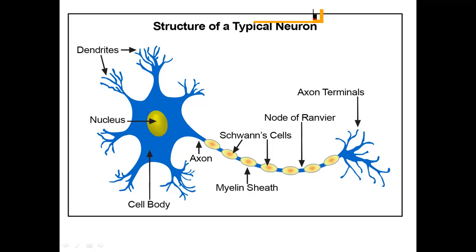The entire nerve impulse transmission occurs in a very fast way. Next is the node of Ranvier. This constriction — the neurolemma part — wherever the myelin sheath is absent, it forms the node of Ranvier. At the very end we get terminal branches which are also known as the axon terminal. This is the structure of a typical neuron.